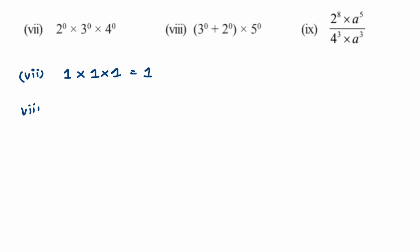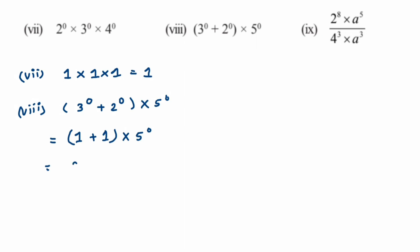Eighth question: we have (3 to the power 0 plus 2 to the power 0) multiplied by 5 to the power 0. Solving the bracket first: 3 to the power 0 is 1, plus 2 to the power 0 is 1, giving 2. Then 2 multiplied by 5 to the power 0 — and 5 to the power 0 is 1 — so the answer is 2 into 1, which equals 2.